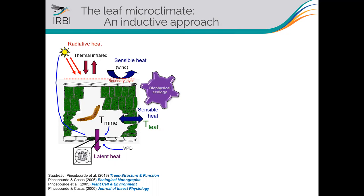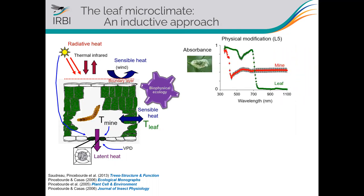We started with the most obvious modification — the optical properties of the mine surface. There are white patches, so we hypothesized that these feeding windows should modify the ability of the surface to absorb incoming energy. We measure this as absorbance: zero when all incoming radiation is transmitted or reflected, one when all incoming energy is absorbed. For intact leaf tissues of a C3 plant, they absorb strongly in the visible wavelength and almost nothing in the near-infrared range.